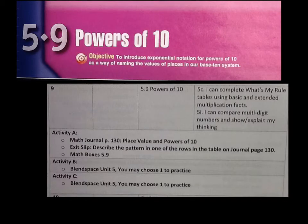Today, then, you're going to complete Lesson 5.9. We already did Math Journal page 130. Your big job today is writing an exit slip to describe the pattern in one of the rows in the table on Journal page 130. This should be a minimum of 5 sentences.